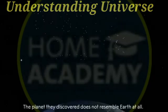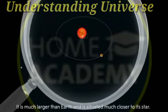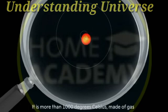The planet they discovered does not resemble Earth at all. It is much larger than Earth and is situated much closer to its star. It is more than 1,000 degrees Celsius, made of gas.